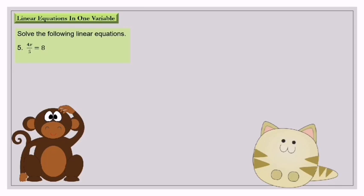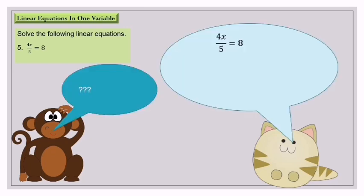Question number 5: 4s over 5 equals 8. In this question, we move the bottom part first. This is divide. When you move to the right hand side, it will become multiply. 4s equals 8 times 5. 4s equals 40. s equals 40 divided by 4. s equals 10.